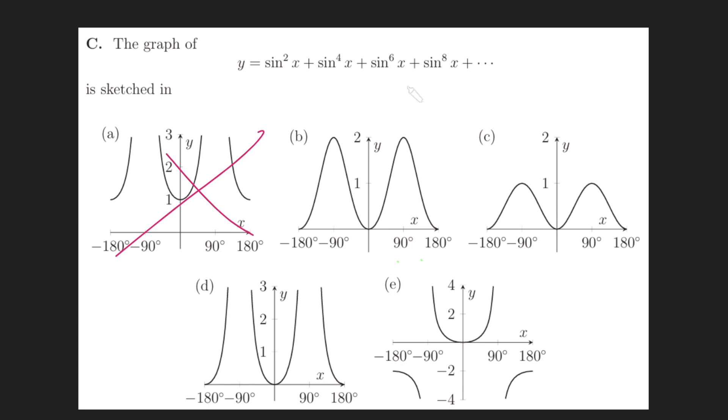So that means that the graph has got to have these asymptotes, and so it's got to be one of these two here. These guys are bounded, so it can't be them.